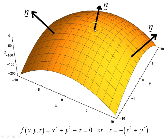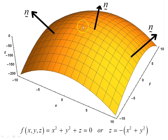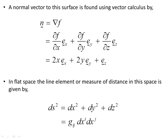Each of these basis vectors are tangent to the coordinate lines here — at that point P they are tangent to the coordinate lines. The normal vectors are perpendicular to those basis vectors and they are pointing in different directions at different points in the space. So a normal vector of this surface is found using the familiar vector calculus from Euclidean space. n = del f gives us 2x times the basis vector in the x direction, plus 2y times the basis vector in the y direction, plus the basis vector in the z direction.